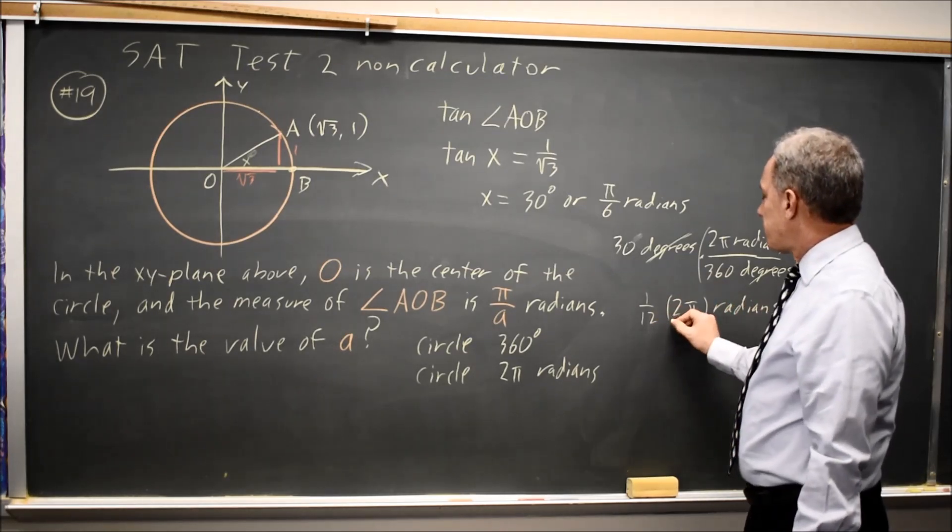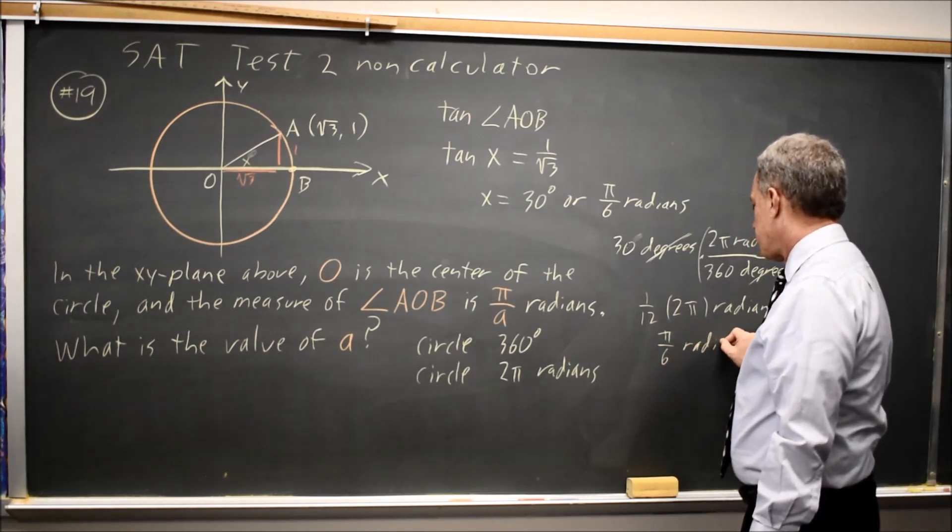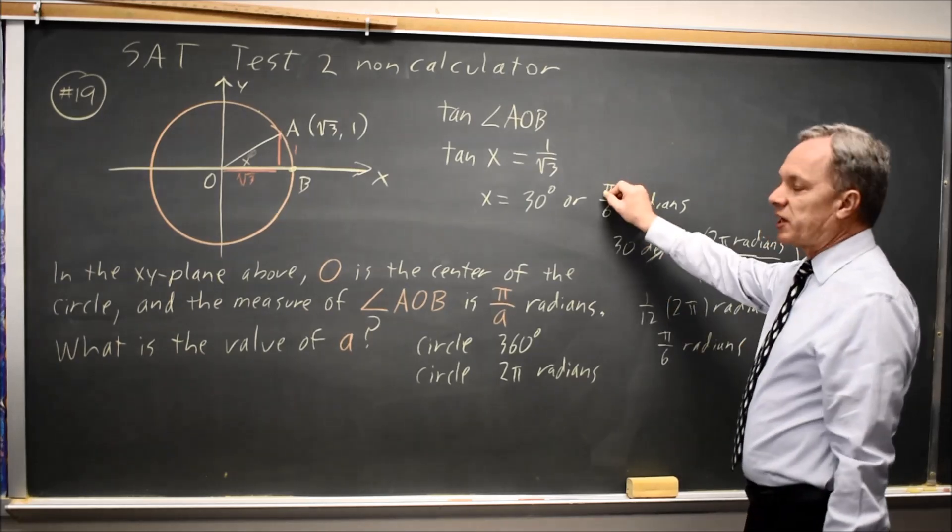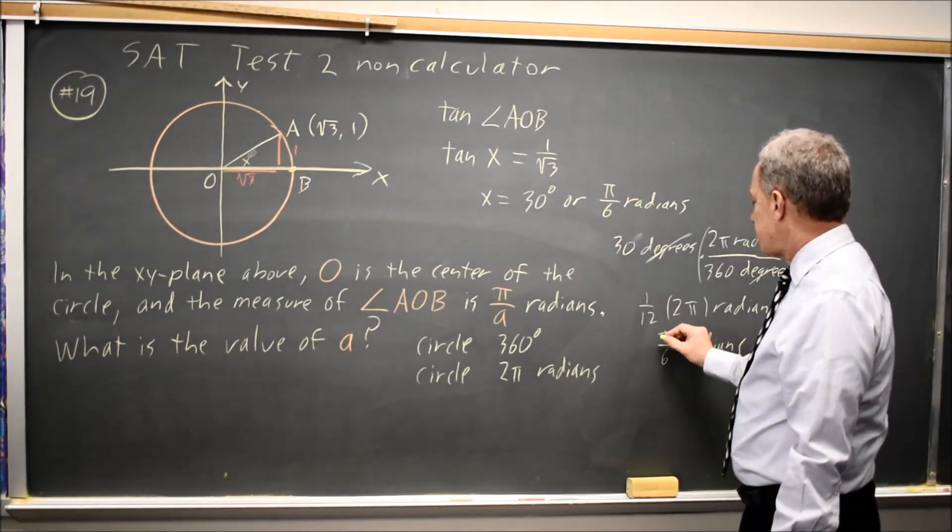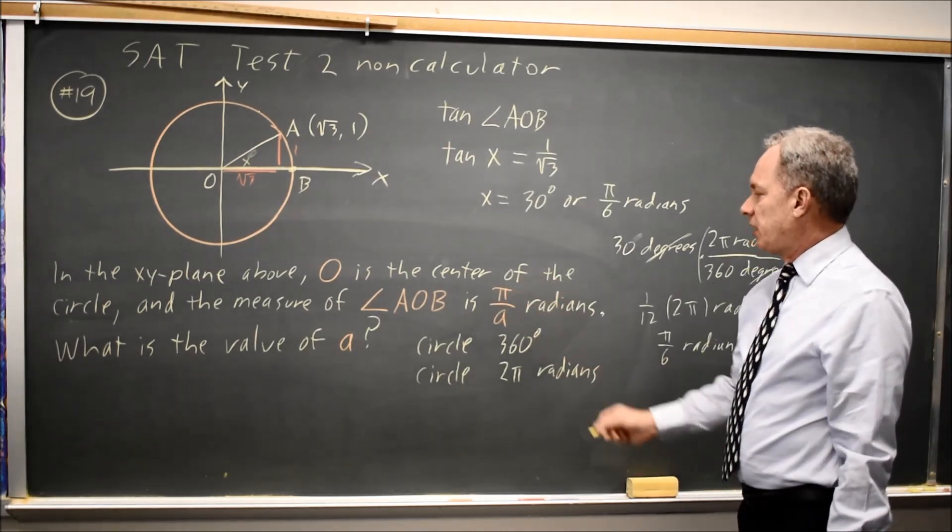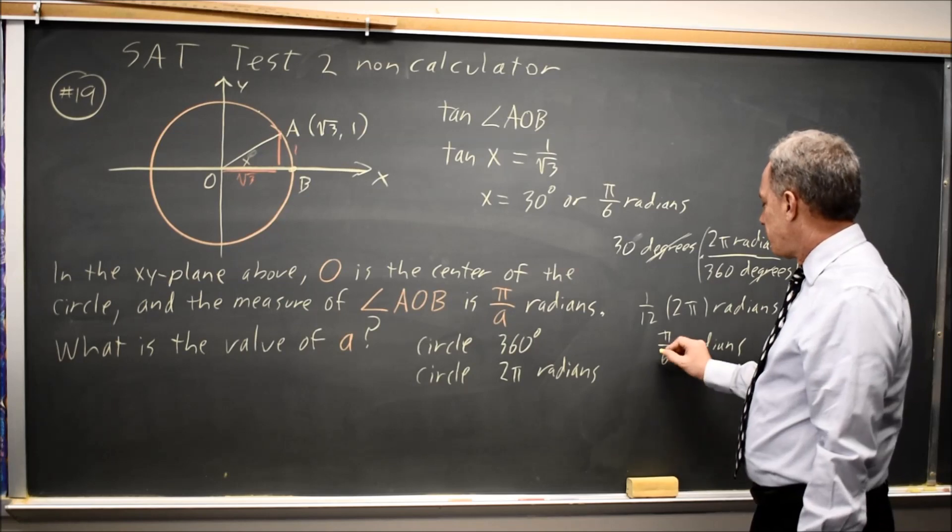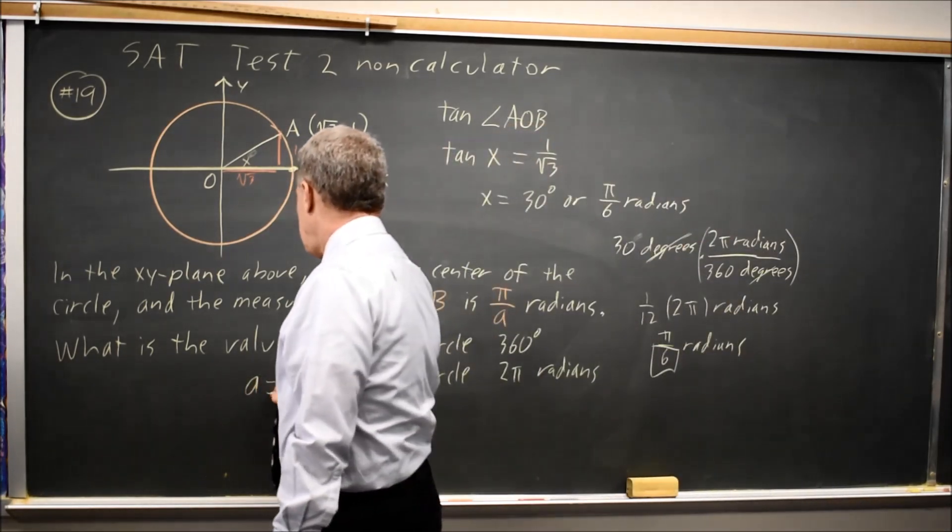1 over 12 times 2 pi is pi over 6, which is the value that those of us who have worked with radians more will recognize for this circle. They're asking for pi over a, just the value of a, so that would be the denominator a equals 6.